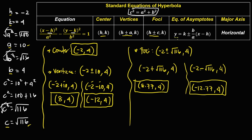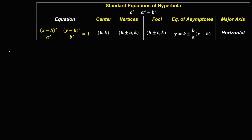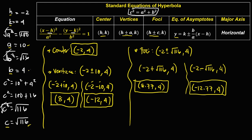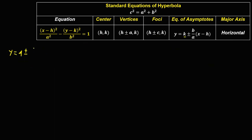For the equations of asymptotes, use y equals k plus or minus (b over a) times (x minus h). Substituting: y equals 4 plus or minus (4 over 10) times (x minus negative 2). Simplifying 4/10 reduces to 2/5, and minus negative 2 becomes plus 2. So y equals 4 plus or minus (2/5)(x plus 2).